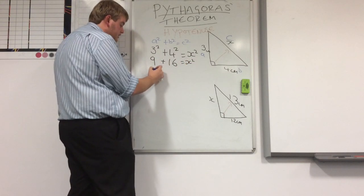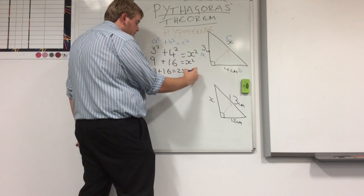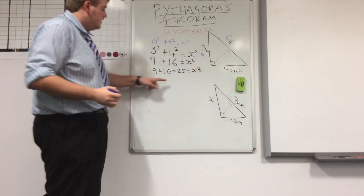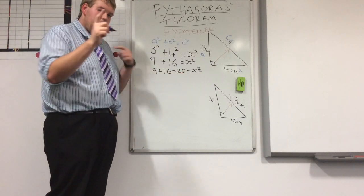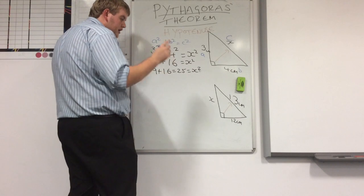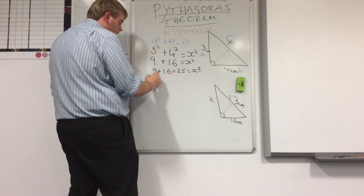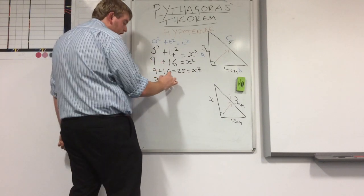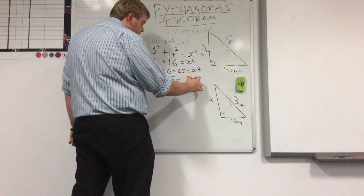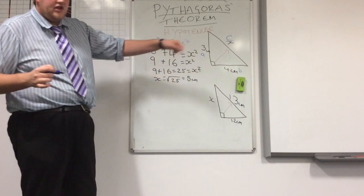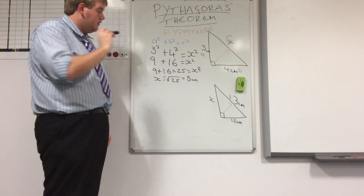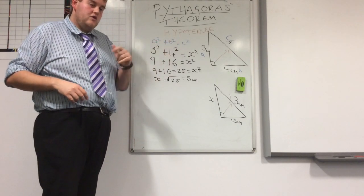Now we add these together: 9 add 16 is 25. So we've got X squared is 25. Remember, inverse operations to solve for X — the inverse of squaring is square rooting. So the square root of X squared would be X. X is going to be the square root of 25, which is 5. And then units — 5 centimetres, because you've got centimetres in there. Don't forget units — you can lose marks in exams. That's finding a long side using Pythagoras.